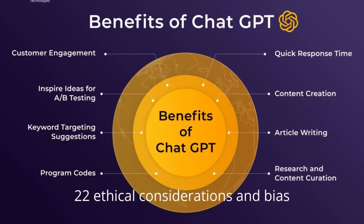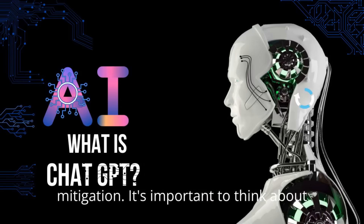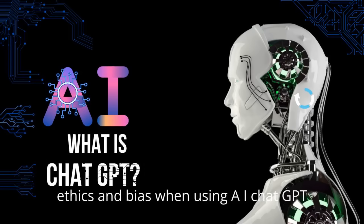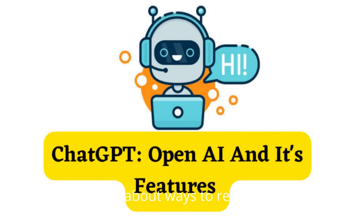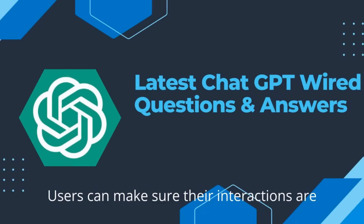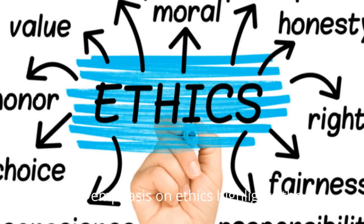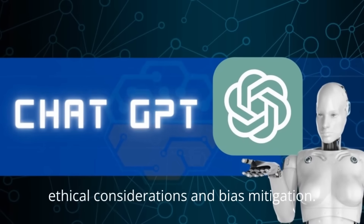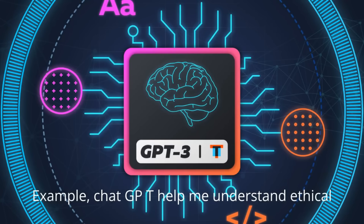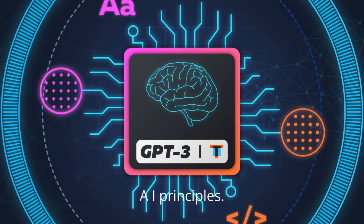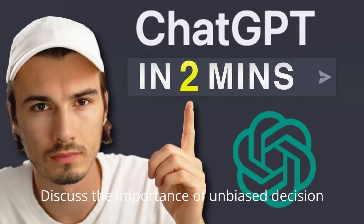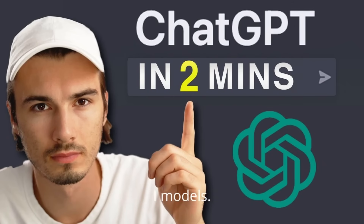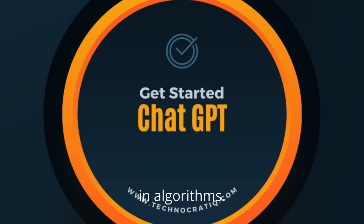22. Ethical Considerations and Bias Mitigation. It's important to think about ethics and bias when using AI ChatGPT. By talking about ways to reduce biases and promote ethical practices, users can make sure their interactions are fair and responsible. This emphasis on ethics highlights the need for mindful AI use and fairness in AI responses. Example: 'ChatGPT, help me understand ethical AI principles. Discuss the importance of unbiased decision-making and fair representation in AI models, highlighting strategies to reduce biases in algorithms.'